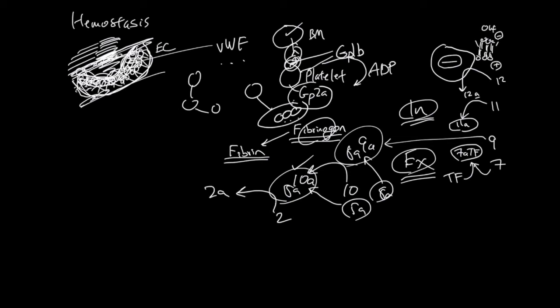And 2A is going to convert protein 1, which is fibrinogen, into fibrin, the 1. The protein 2 is called a prothrombin. And protein 2A is called thrombin.